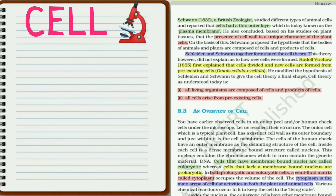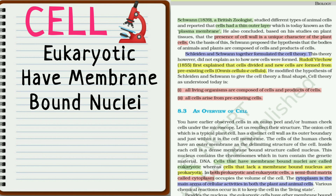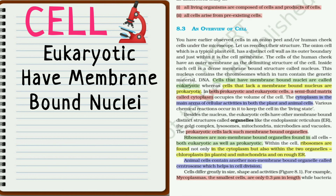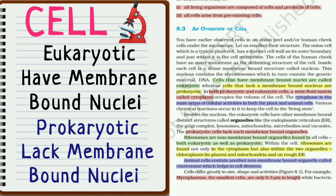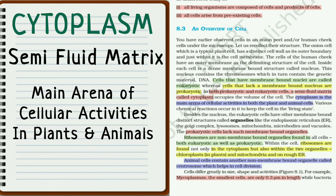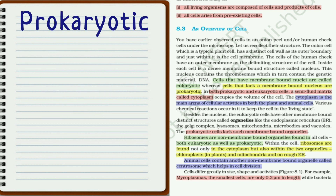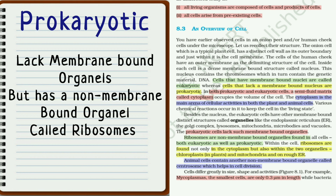Cells having membrane-bound nuclei are called eukaryotic, and cells that lack a membrane-bound nucleus are called prokaryotic. Cytoplasm is just a semi-fluid matrix. A prokaryotic cell usually lacks other membrane-bound organelles except ribosomes.